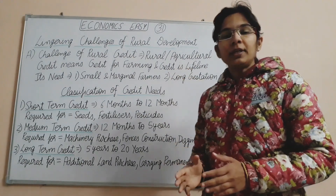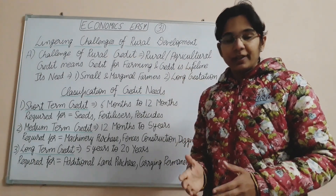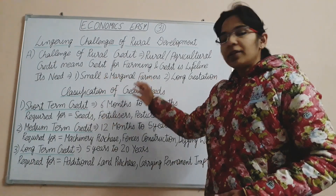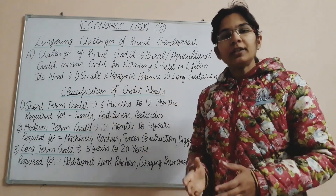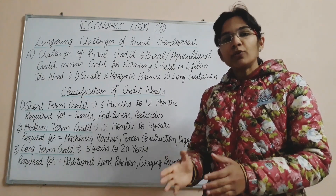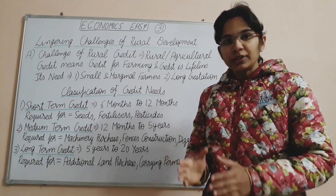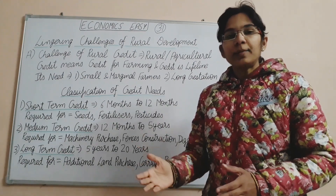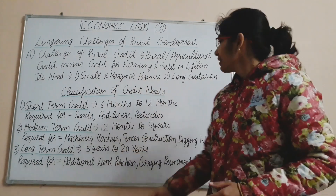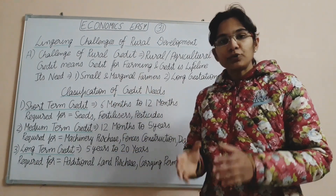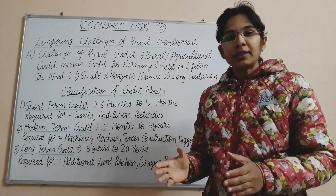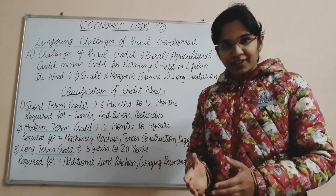Credit is the lifeline of farming. Why is credit needed? First, because of small and marginal farmers — these farmers could only produce enough for self-consumption. If they had to produce more, they would need to invest, but where would they get money from farming? Second, there is a long gestation period — the sowing and harvesting time is very long, and that is why farmers need credit.